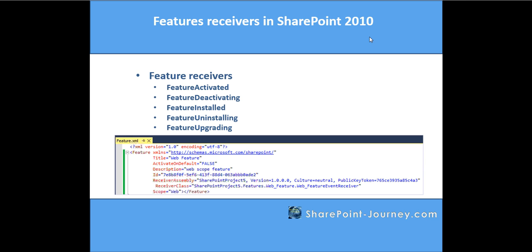You have different types of feature receivers. While activating the feature you want to execute a certain piece of code — for example, you can create a list using the server object model. You can use the feature activated method, and during the feature deactivating method you can delete the functionality which you created during activation.